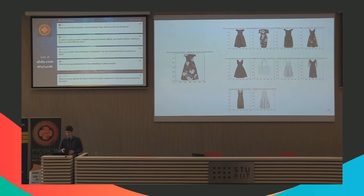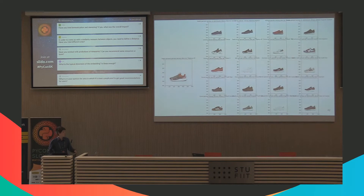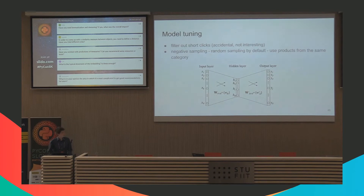For dresses, the model outputs other visually similar dresses and items like a bag that might suit the dress. For running shoes, the output includes different brands of shoes, some in the same color. All of this is learned just from customer session data.